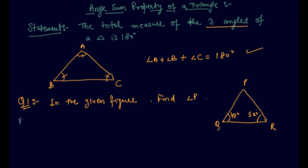Now I have to solve this question and find out the value of angle p. By using this property, I can directly write angle p plus angle q plus angle r would be 180 degrees and I know the value of angle q and r.